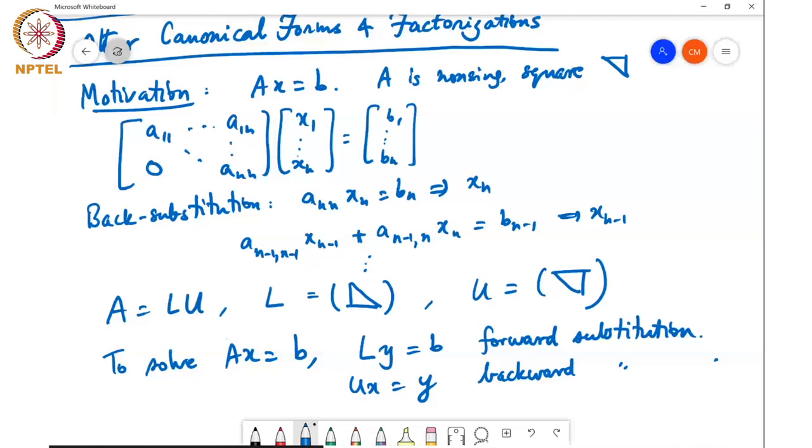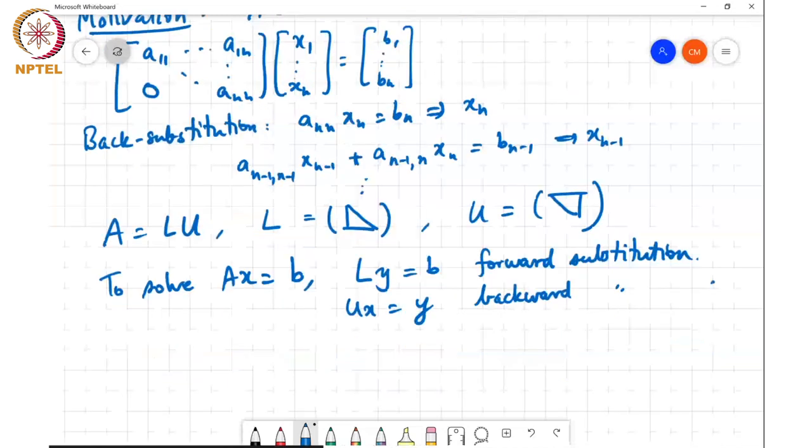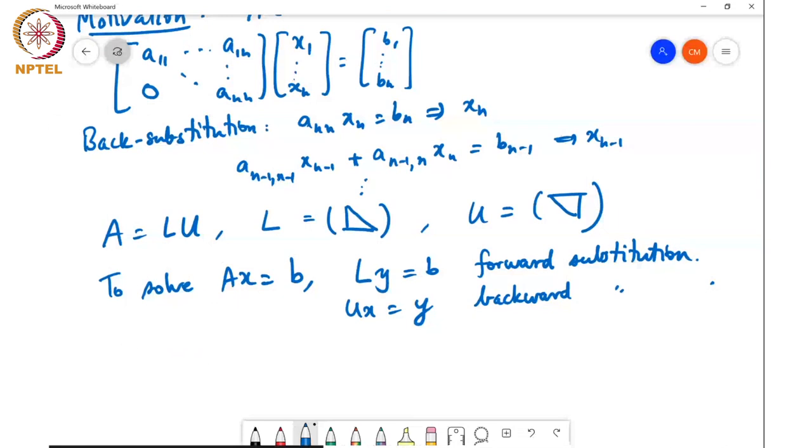So this is meaningful only if I can compute L and U without too much computational effort. Otherwise, I might as well try to invert A. Okay, so how do you do this LU factorization? So the answer to that question lies in what is known as Gaussian elimination.